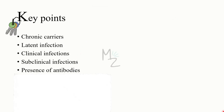Key points to mention: after the recovery period, some individuals become chronic carriers of the organisms and may shed them while remaining clinically well. Others may develop a latent infection which can recur either in the same form as the primary infection or manifesting different signs and symptoms. Many infections cause clinical symptoms, but many others are subclinical — meaning the individual remains asymptomatic although infected. In subclinical infections and after recovery, the presence of antibodies is often used to determine that an infection has occurred.